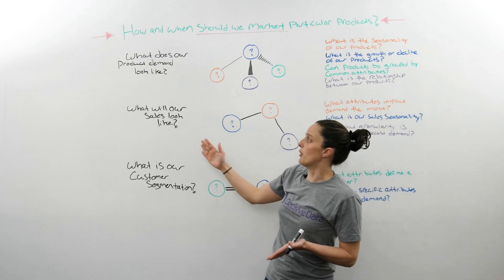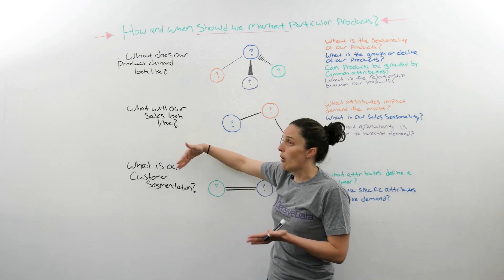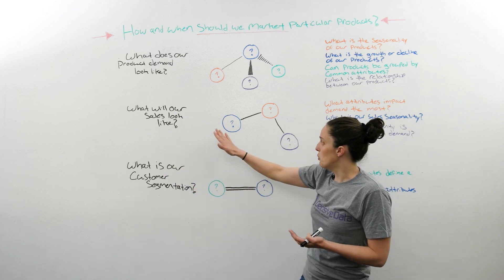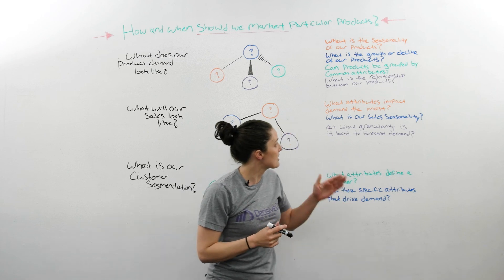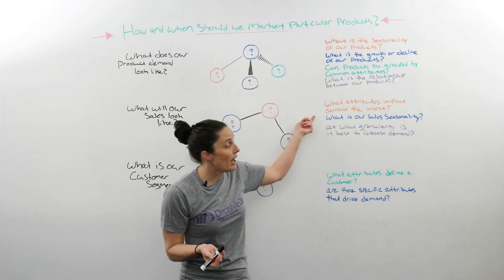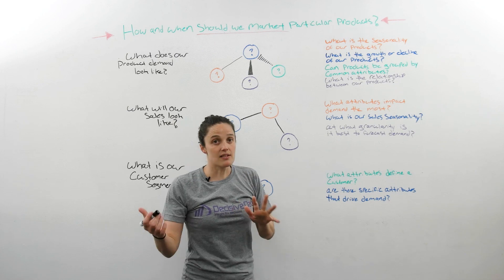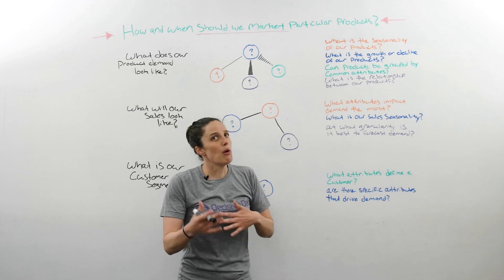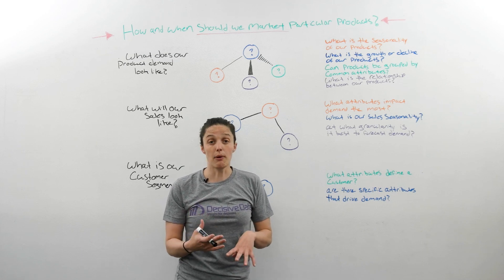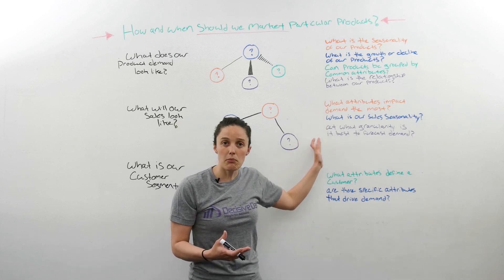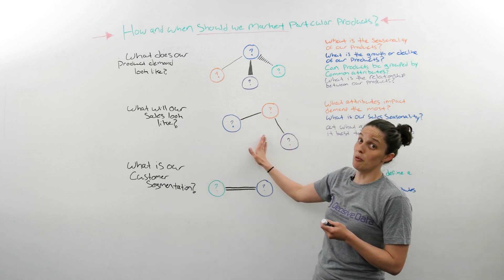If we continue on with this example, we also know that we need to understand what will our sales look like in the future. So we'll call this our future sales molecule. And all the elements that compose that are listed here. What attributes impact demand the most? What is our sales seasonality? And at what granularity do we want to build a forecast model from? Once we know all of these elemental questions, we can have our future sales molecule built.